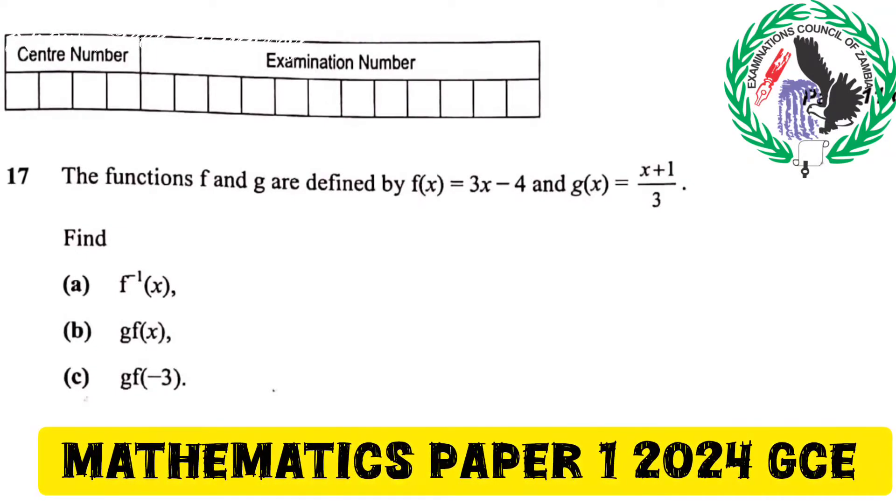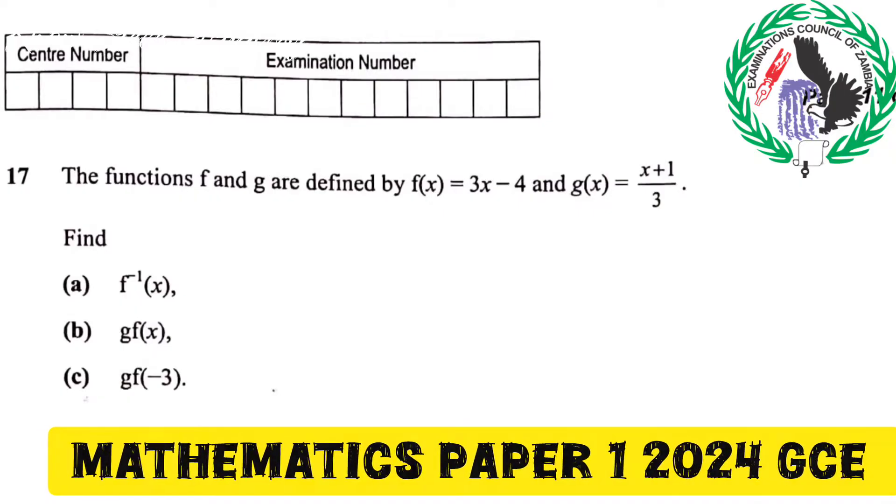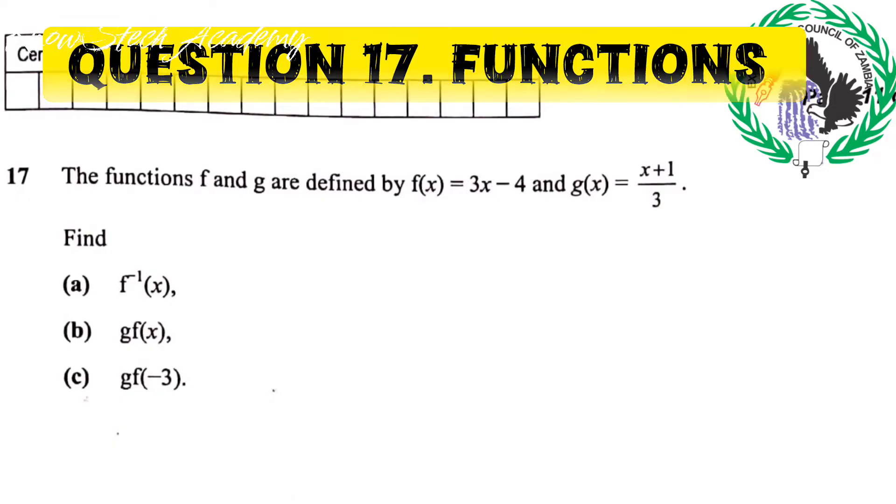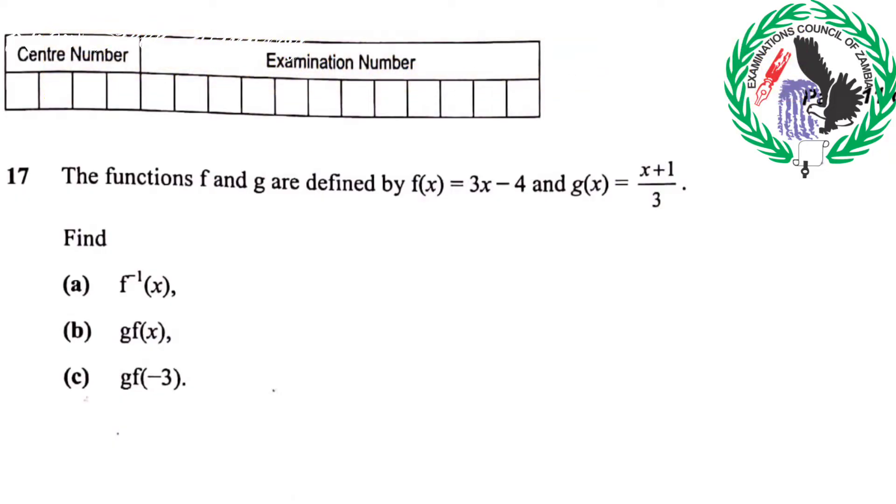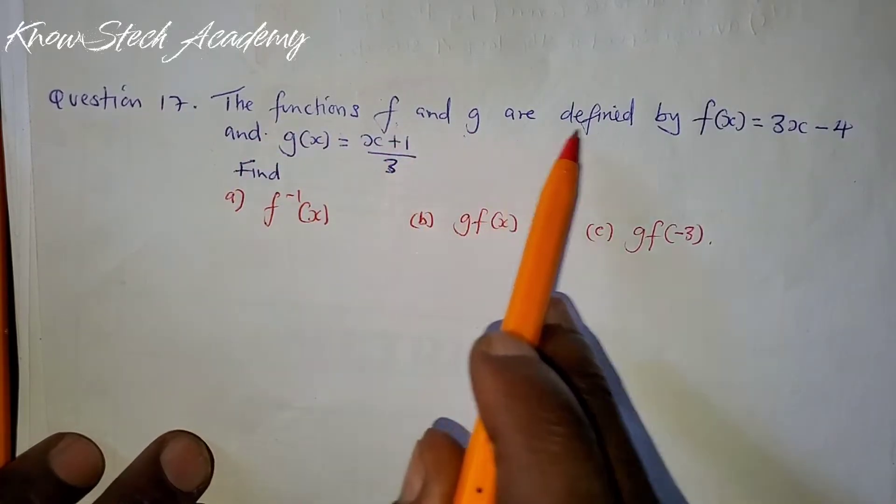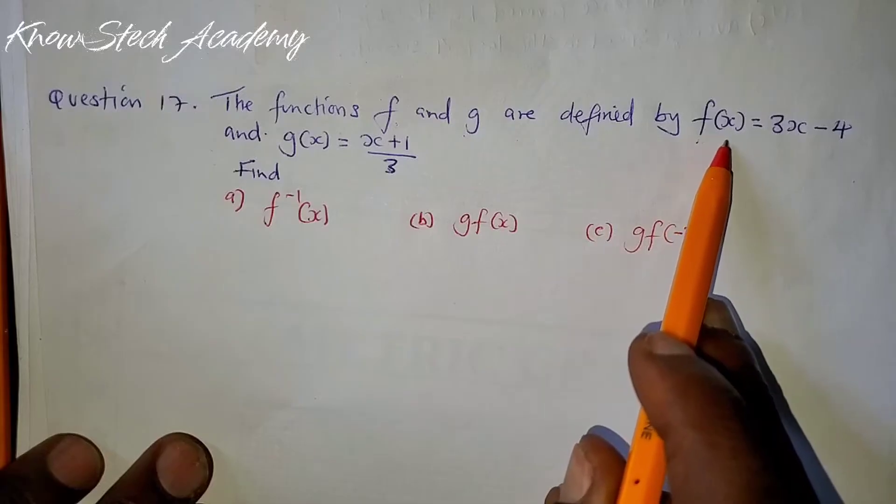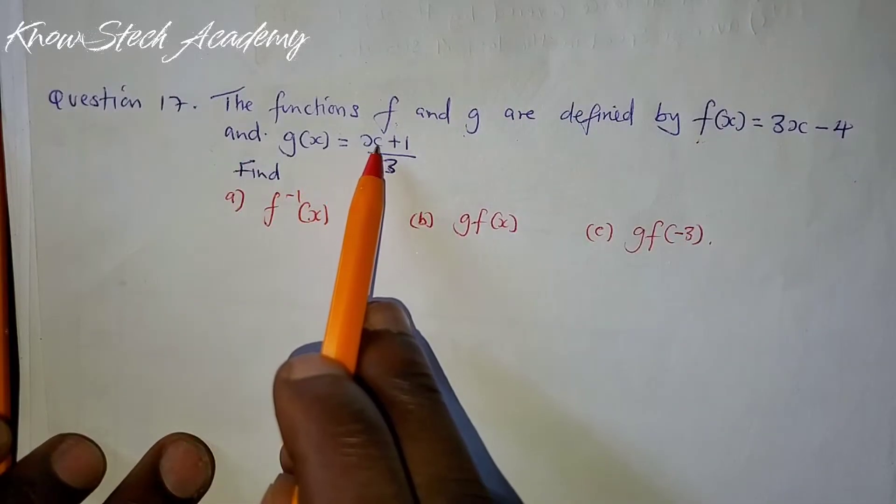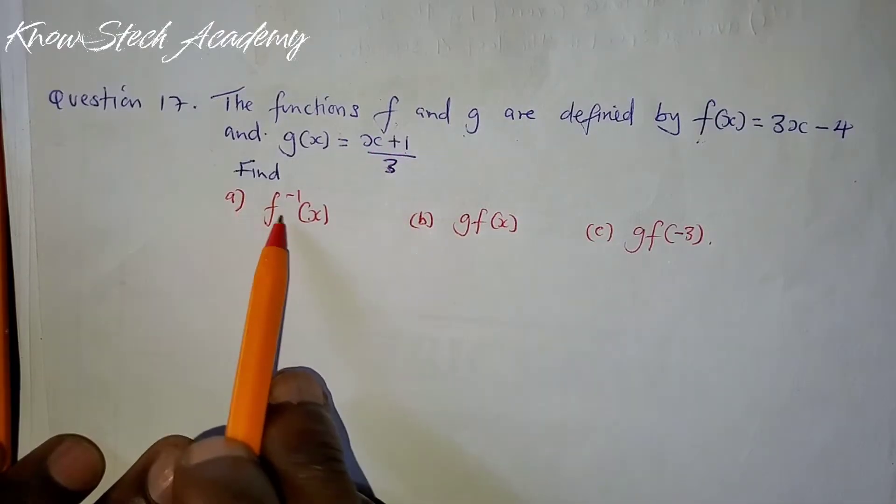Hello guys, we have this question of 2024 Mathematics GCE1. Question 17, this is under Functions. The question reads: the functions f and g are defined by f(x) = 3x - 4 and g(x) = (x + 1)/3.